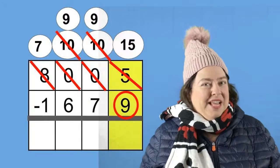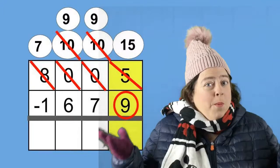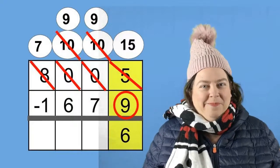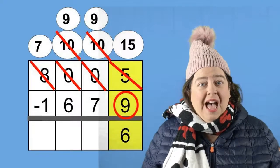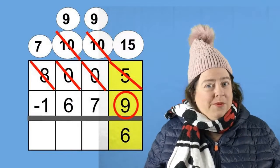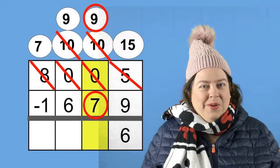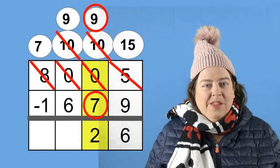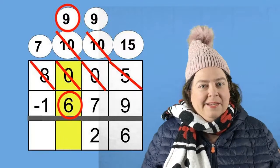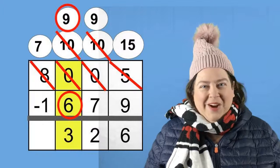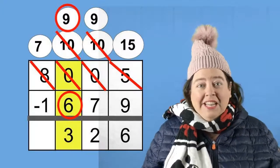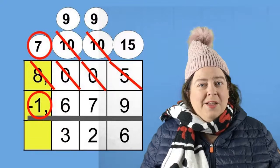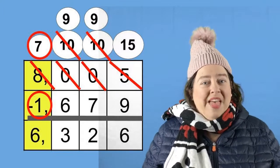And now that I have fifteen ones, I can subtract. Fifteen minus nine. What does that equal? That's right. Fifteen minus nine equals six. And now I can subtract the tens place. I have nine minus seven. What does that equal? That's right. That equals two. So I'm going to put that in the tens place. Now let's go subtract our hundreds place. We have nine minus six. So what does that equal? That's right. That equals three. And finally, we can also now subtract the thousands place. So we have seven minus one. What does that equal? That equals six.